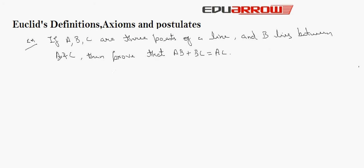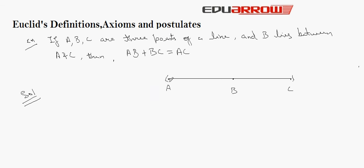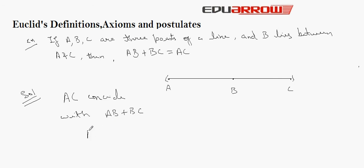Example: If A, B, C are three points on a line and B lies between A and C, then prove that AB plus BC equals AC. Given the figure, AC is a line and B is a point between A and C. By Euclid's Axiom 4, things which coincide with one another are equal to one another. Since AC coincides with AB plus BC, AC is identical to AB plus BC, and therefore AC equals AB plus BC.